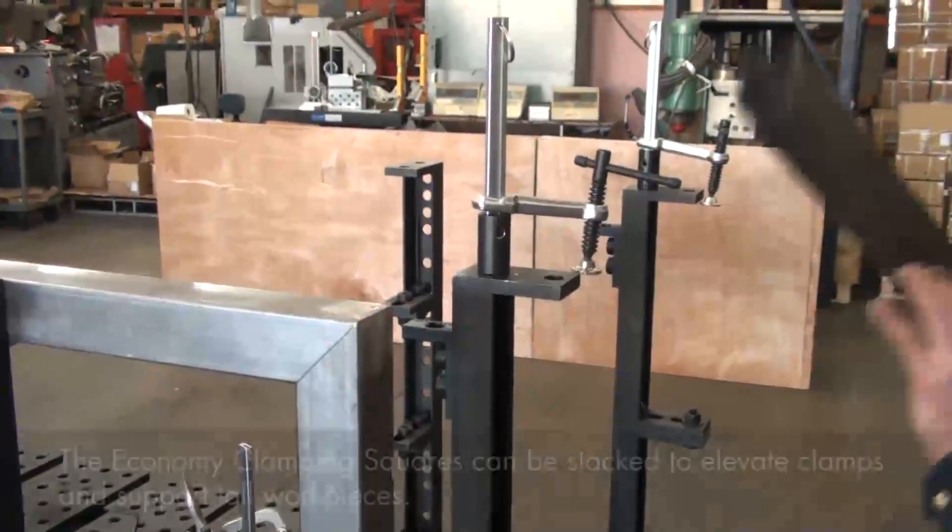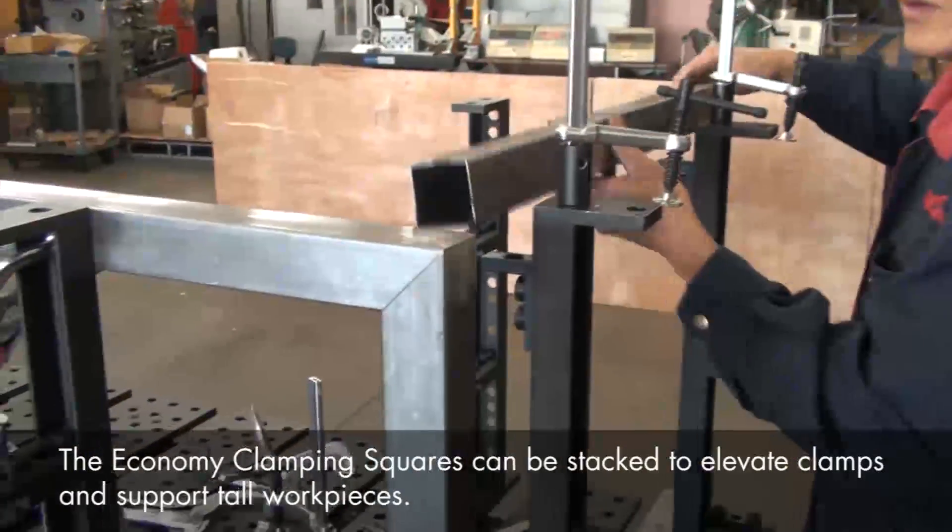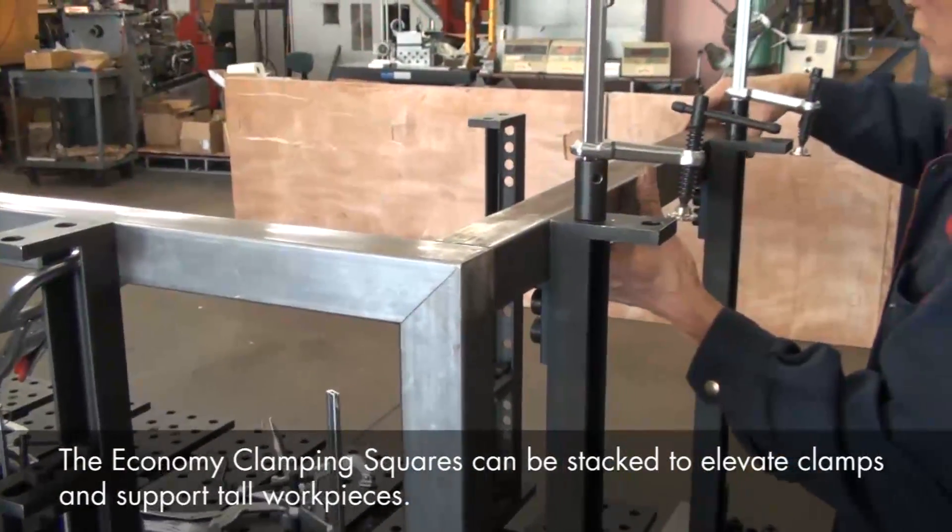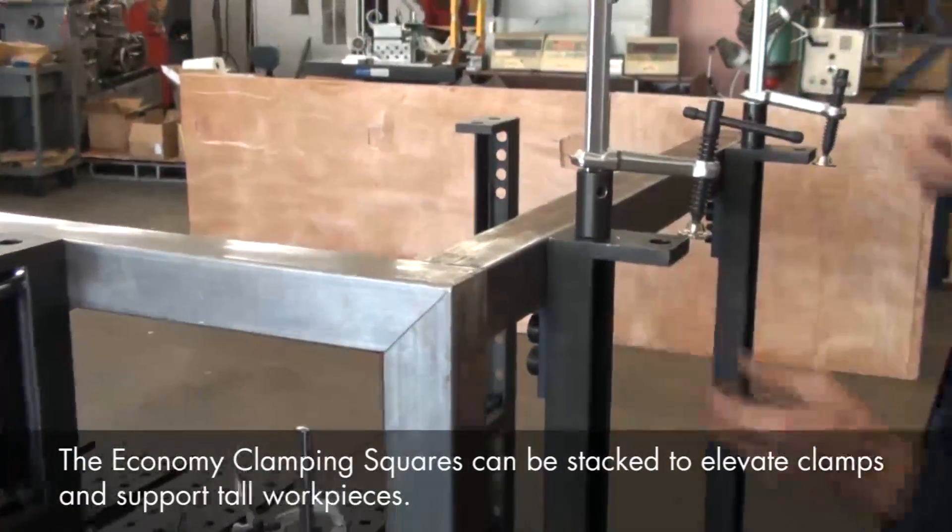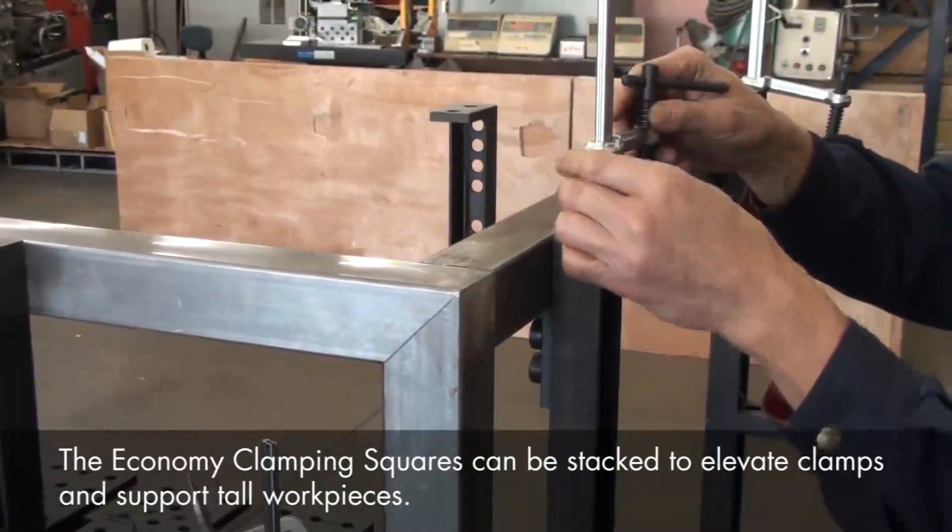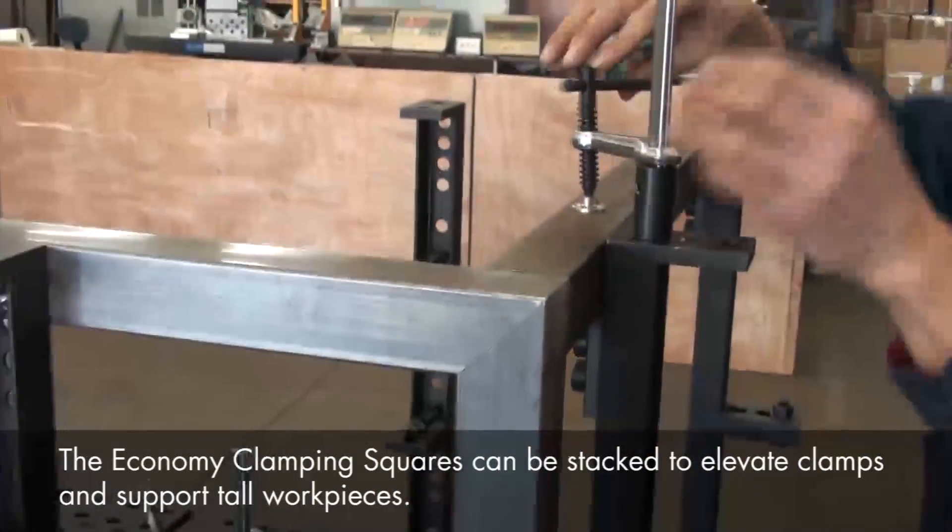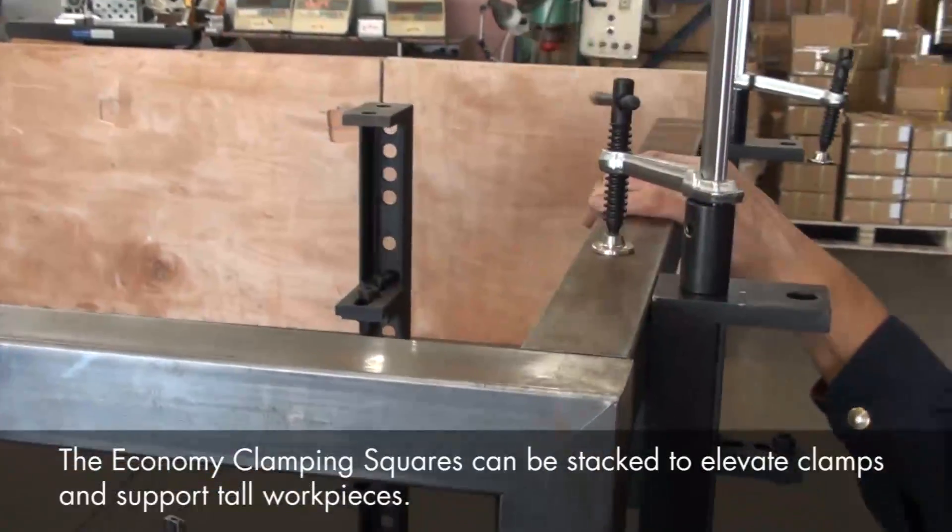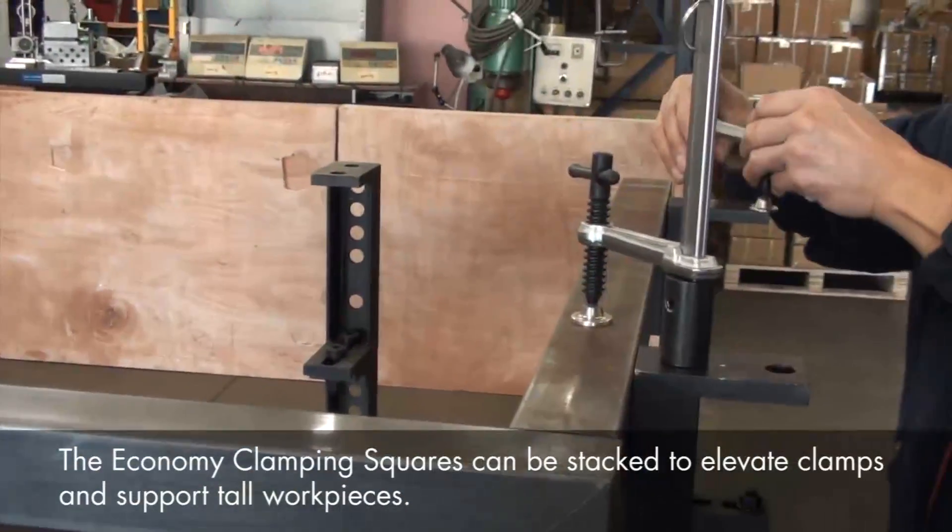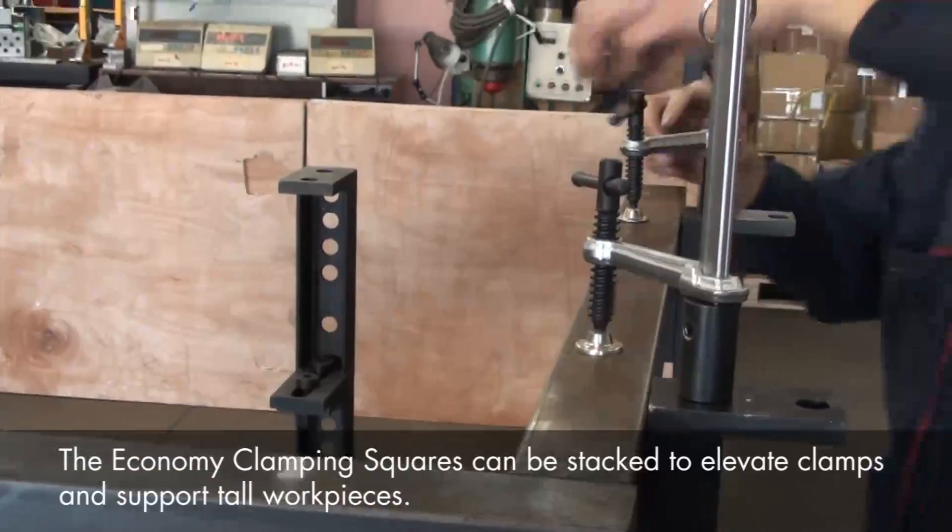Here at the end of our frame, we'll use the top surface of the Economy clamping squares to mount our Inserta Clamps and provide downward clamping pressure. We'll just slip our Inserta Clamps right into the 5/8 holes on the clamping squares, then clamp down and tighten.